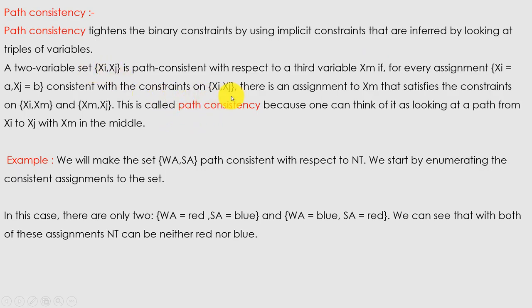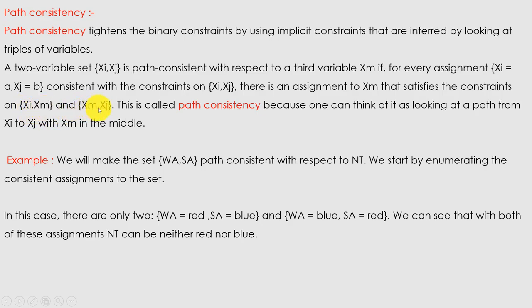So in path consistency, xm is the middle or common variable between xi and xj. The pair {xi, xj} satisfies path consistency if xm can be assigned so that both (xi, xm) and (xm, xj) satisfy their constraints. That is called path consistent.